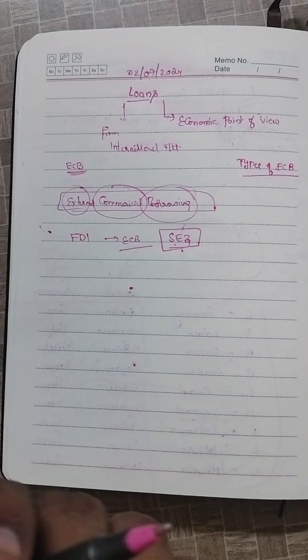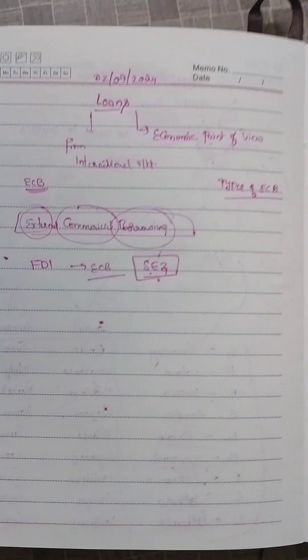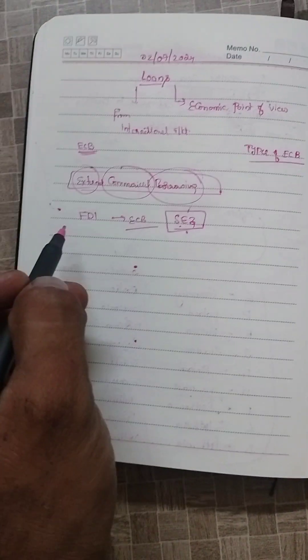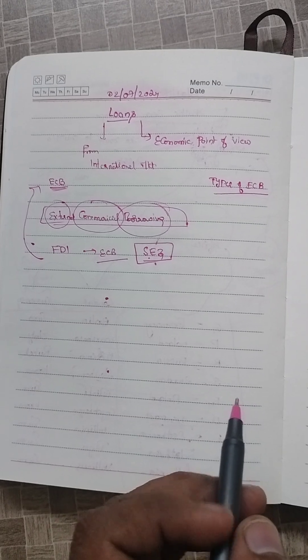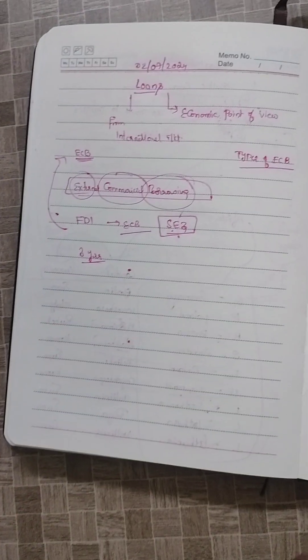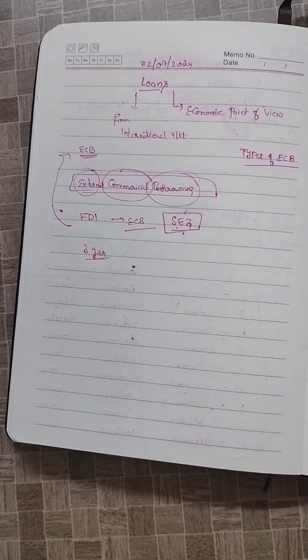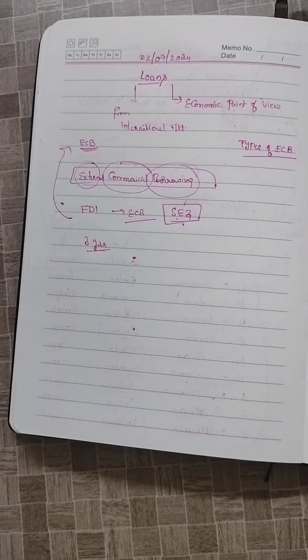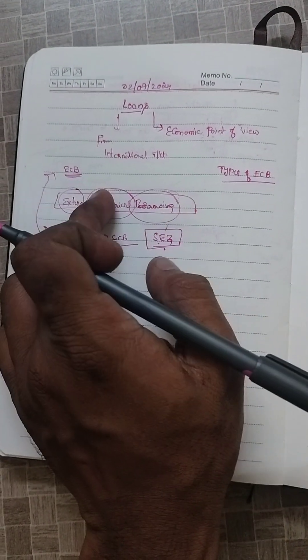ECBs have a general maturity period of 3 years, though exceptions are allowed. External commercial borrowings can be borrowed in any freely convertible currency. These are the points related to ECB.